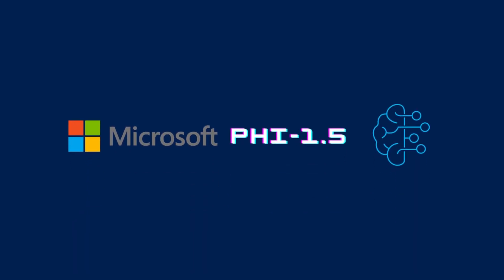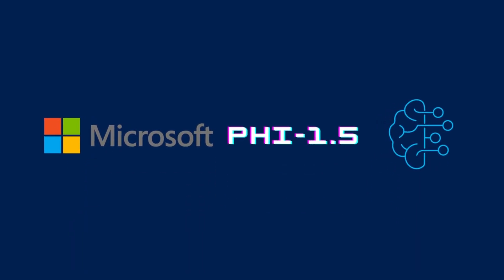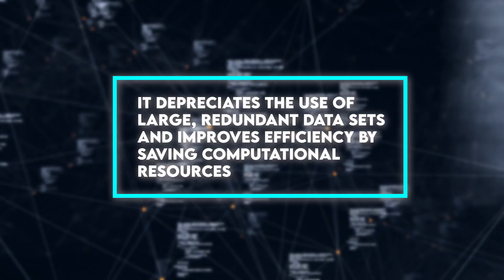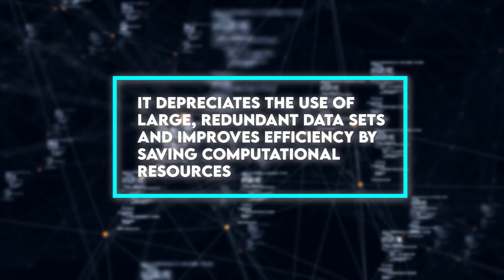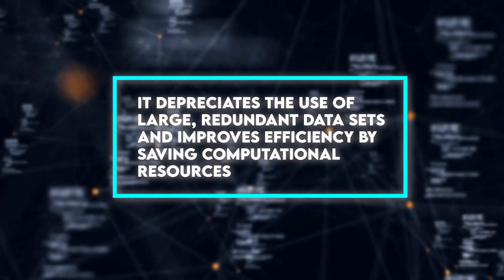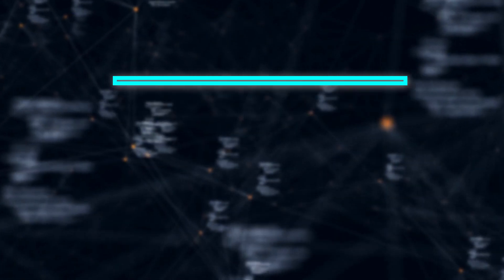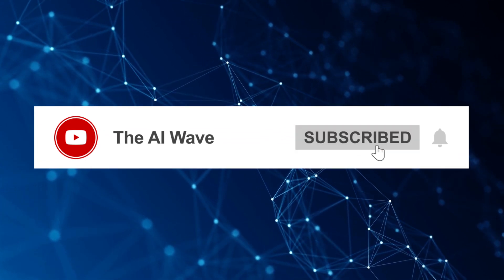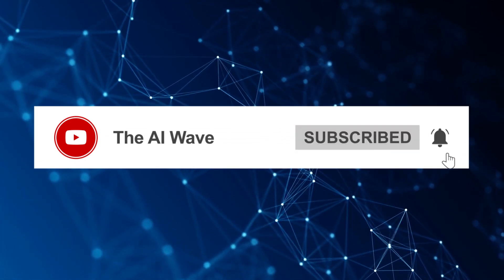Microsoft PHI 1.5 is a compact model that demands less and performs more. It depreciates the use of large, redundant datasets and improves efficiency by saving computational resources. Don't forget to leave a thumbs up and subscribe to the AI Wave to get more exciting news about advances in artificial intelligence.